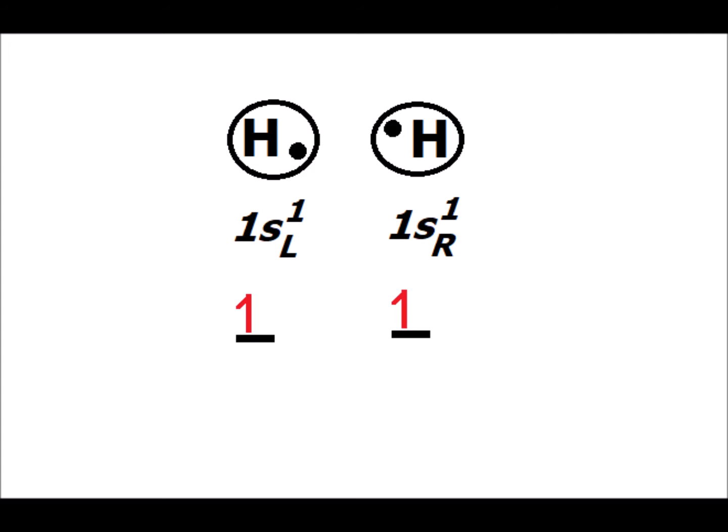If we apply valence bond theory to hydrogen, as shown on the screen, we know that each hydrogen atom has one electron in a 1s orbital. We're going to denote the left hydrogen as hydrogen L and the right hydrogen as hydrogen R. We see the orbital configurations 1sL¹ and 1sR¹, each one has a single electron. The line with the red arrow denotes the 1s orbital having one valence electron, the electron being shown in red.